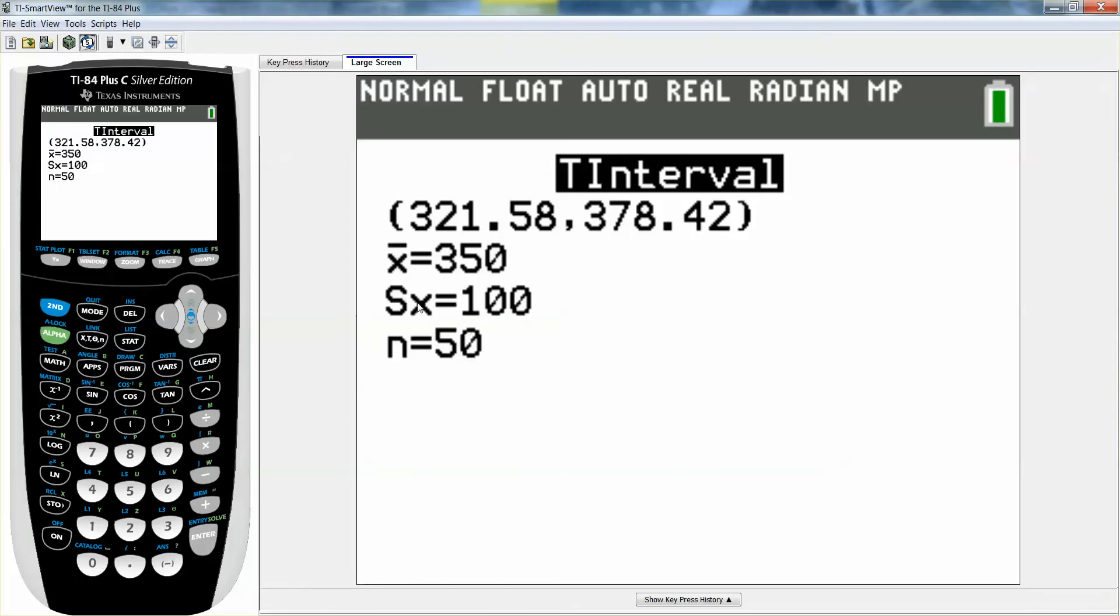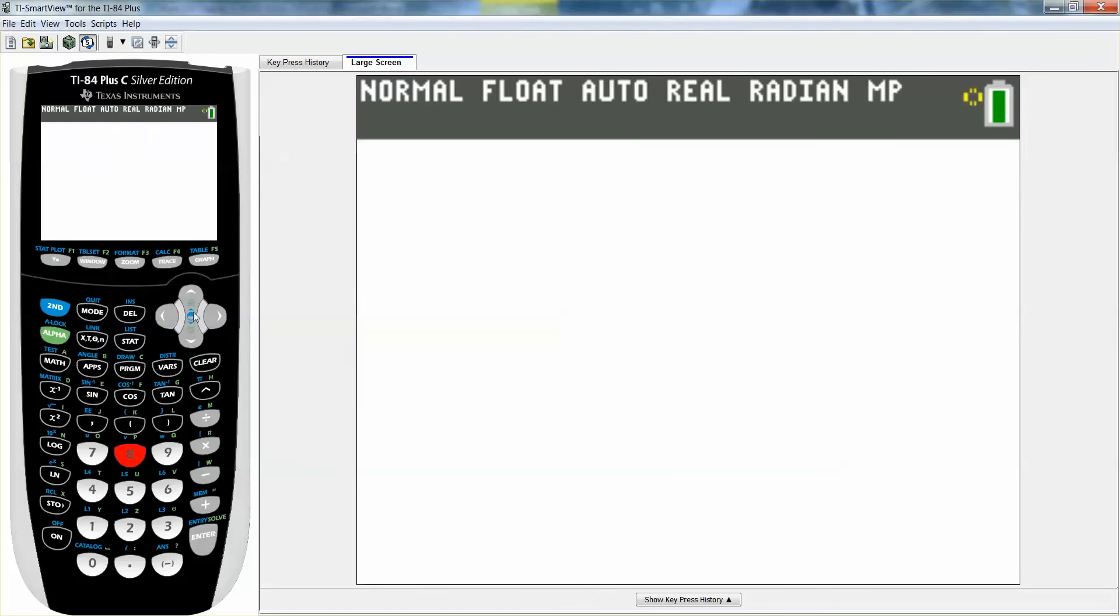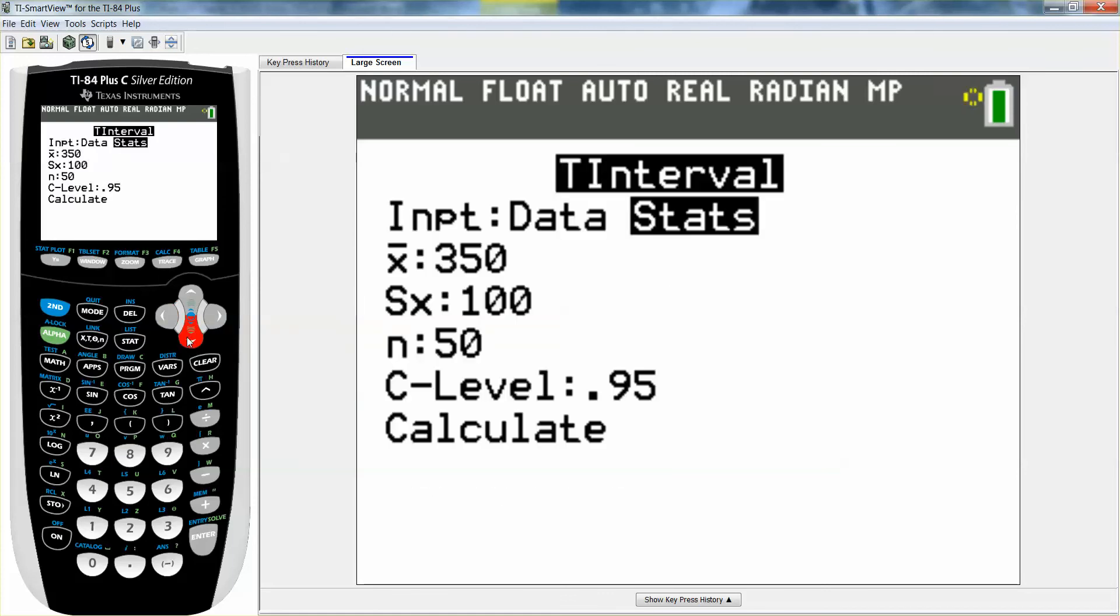And before I go find the error, I'm actually going to find all the intervals because it's the same process over and over and over again. So I'm going to take a T interval, 350, 100. But instead of 50, I want 150 for the second one.